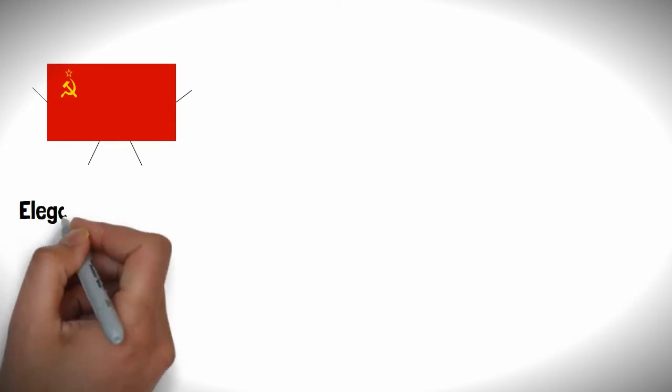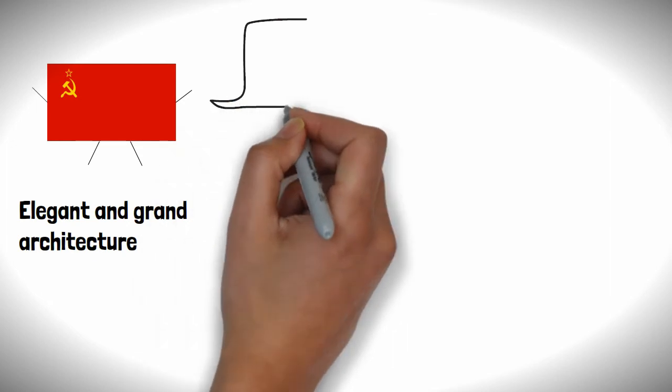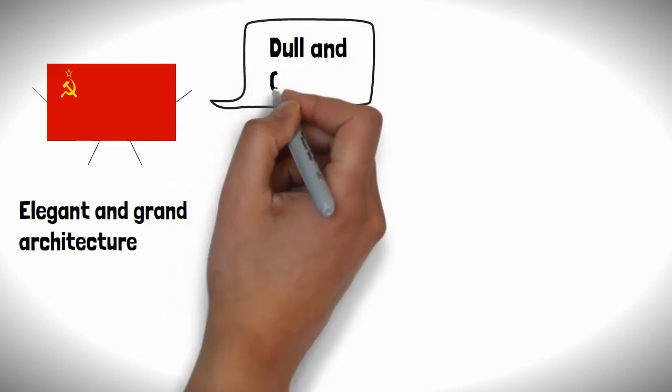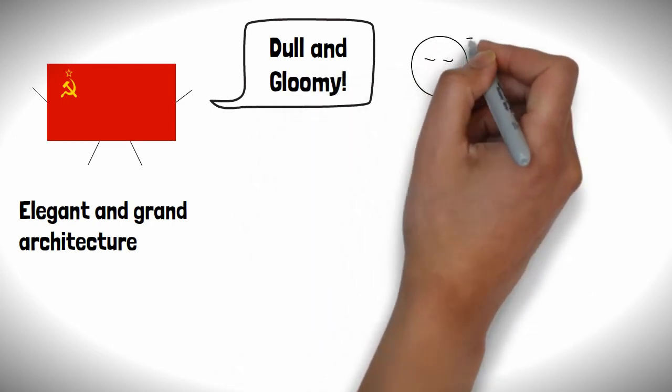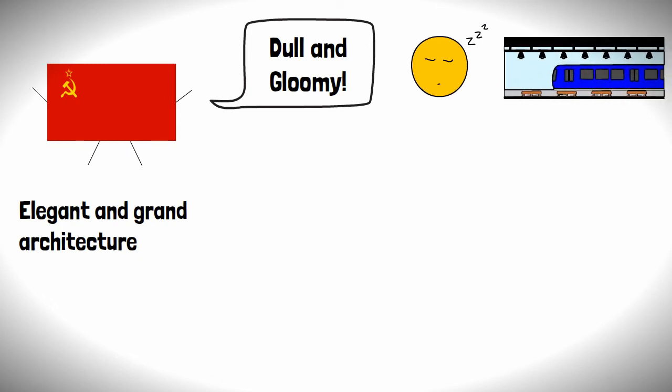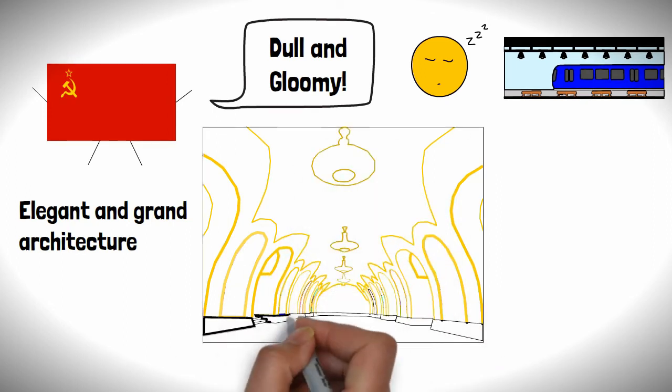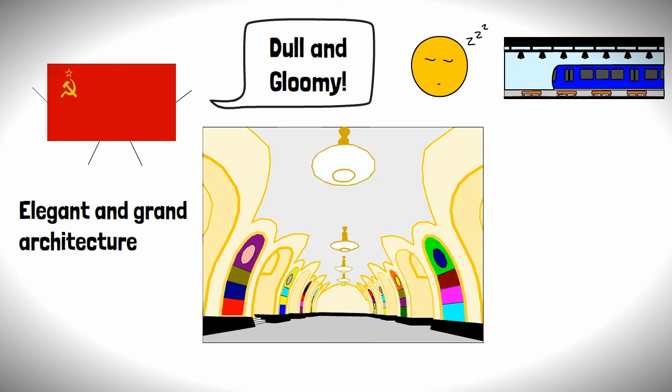One thing the Soviets did have over the capitalists was the elegance and grandeur of the interiors of the stations, and this was by no means a coincidence. It was thought that the architecture of the stations in capitalist countries was dull and gloomy, which in turn would make a tired worker feel even more tired when they hopped on the metro. Moscow was to do a complete 180 on this and build stations with interiors so grand they would be able to lift even the most starving and freezing worker's spirits.